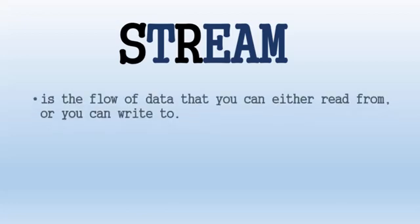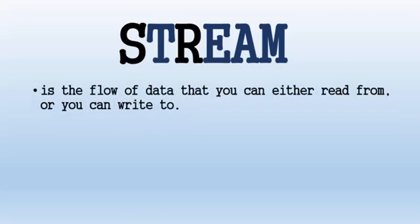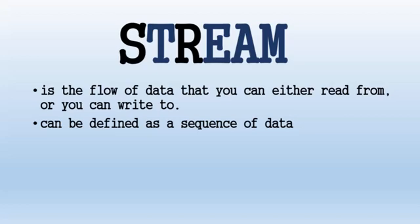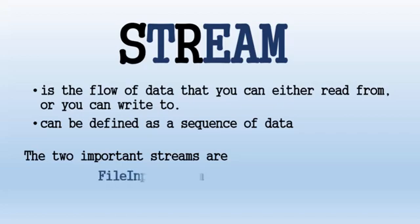Let's start with streams. A stream is a flow of data that you can either read from or write to. We define this as a sequence of data. There are several streams that we can use for input and output. These are the FileInputStream and the FileOutputStream.